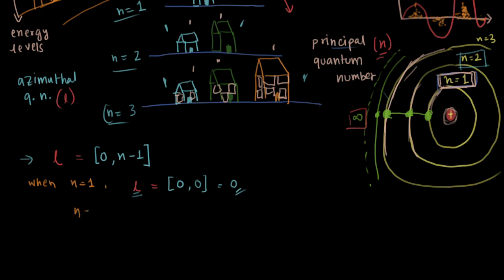What about n equals 2? Here, L will equal 0 to n minus 1, where n is the principal quantum number. So n is 2, and 2 minus 1 is 1, so we can have 2 possible L values. And you get the point - if it was n equals 3, then it will go 0, 1, 2 - that's 3 possible L numbers, 3 possible azimuthal quantum numbers.